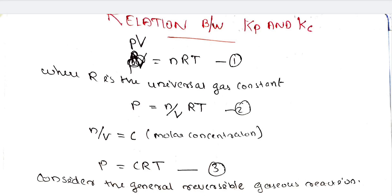Here is the relationship between Kp and Kc. Kp is the pressure equilibrium constant. Kc is the concentration equilibrium constant. Kc is equal to Kf divided by Kb.